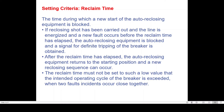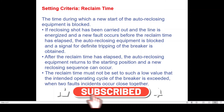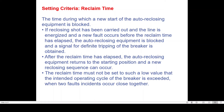The second thing is reclaim time. Reclaim time is basically the time during which a new start of autoreclosing equipment is blocked. Suppose R phase to ground fault occurs — your distance protection relay issues a trip command to R phase, and after one second the autoreclosure relay closes the circuit breaker. After this closing, the first autoreclosure cycle is complete.